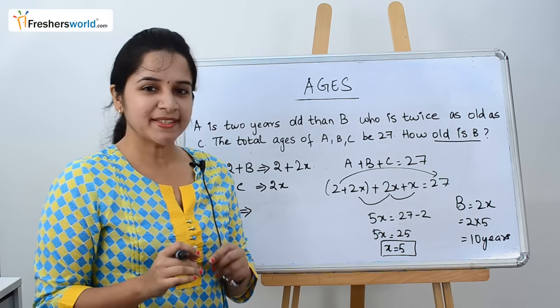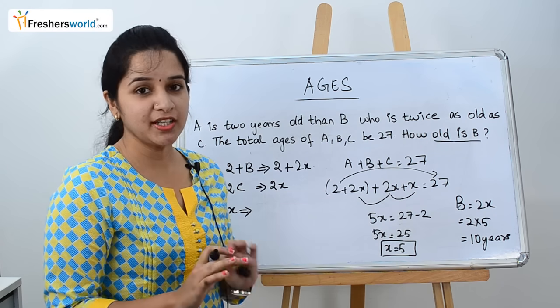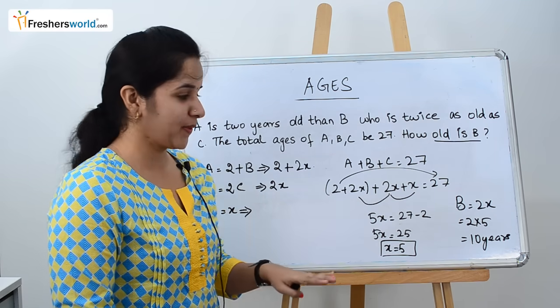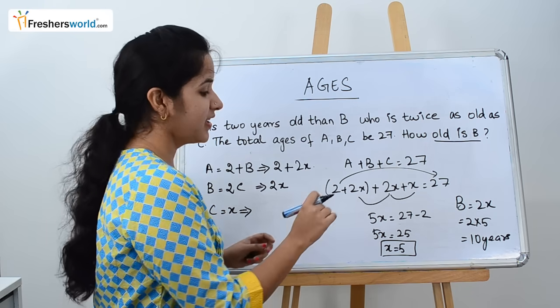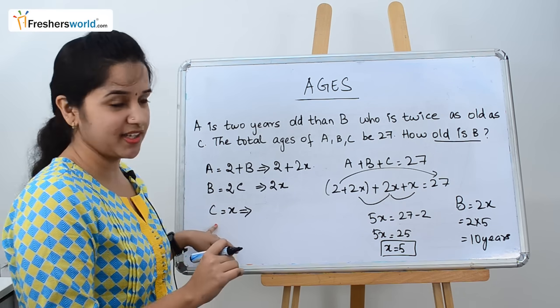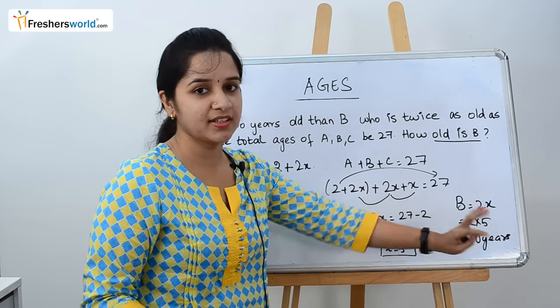The common mistake people make here is you will find X and will also have the answer 5 in your question, so you'll automatically click 5 and finish. But read the question again. Are they asking for the X variable? X is C here. They're not asking for C's age, they're asking for B's age. B is 2X, which is 10 years.